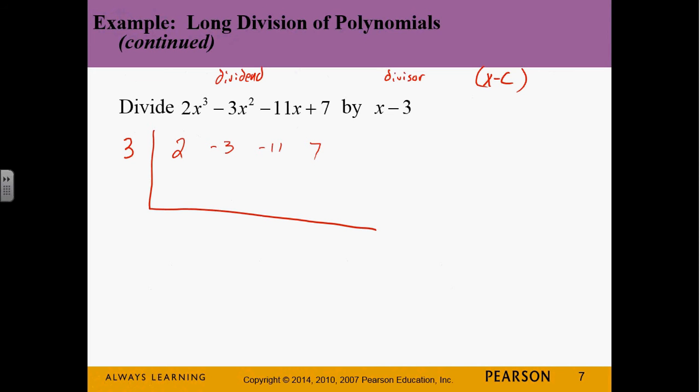Now, if you ever happen to be missing terms in terms of like you've got x cubed, x squared, x to the first, and then the constant, if you were missing say an x squared, you would still have to represent just like we did with long division. You put that zero in there as the coefficient for that term. You always have to have every possible degree represented.